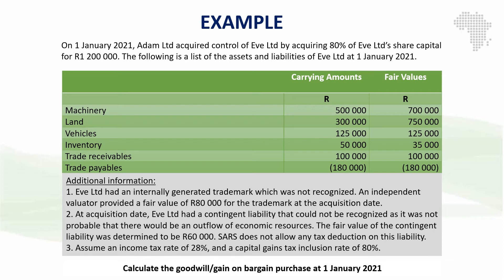From the additional information, we are told that IFE Limited, the subsidiary, had an internally generated trademark which was not recognized. An independent evaluator provided a fair value of $80,000 for the trademark at the acquisition date. This is an internally generated intangible asset — the expenditure relating to it would have been expensed in the books of IFE. However, IFRS 3 requires us at acquisition date to recognize this intangible asset at its fair value of $80,000, and we'll also have to account for deferred tax on this trademark.